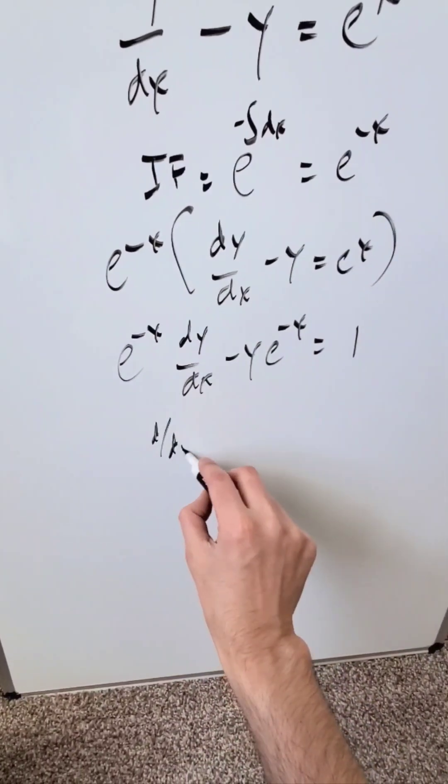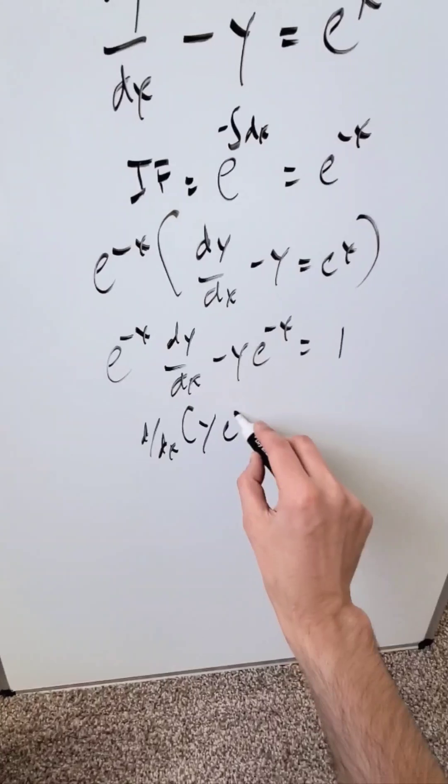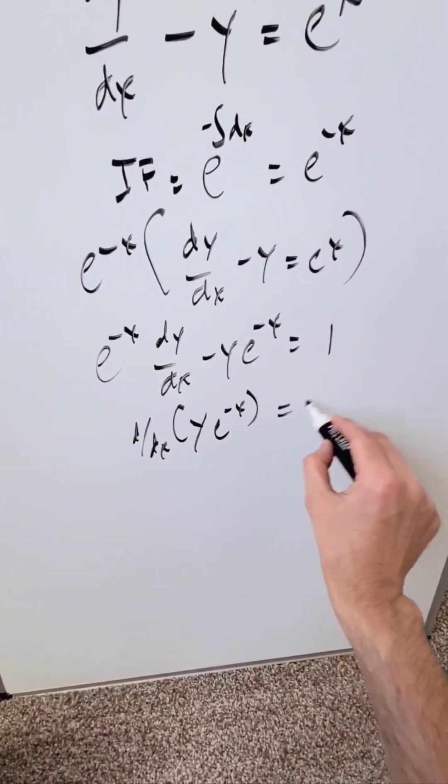All of this is coming from the derivative of a product, and what is that? y e^(-x). Do this derivative. You'll get all of that is equal to 1.